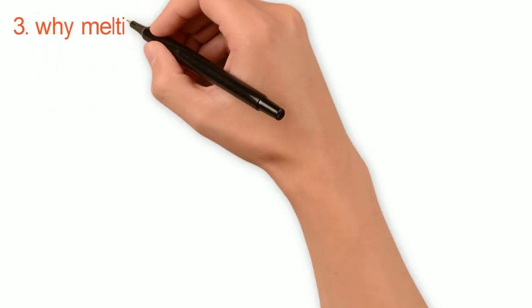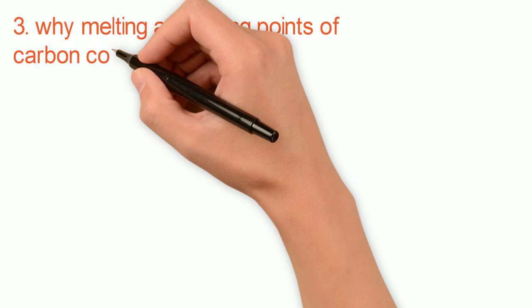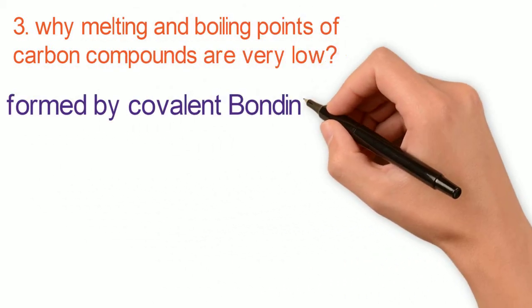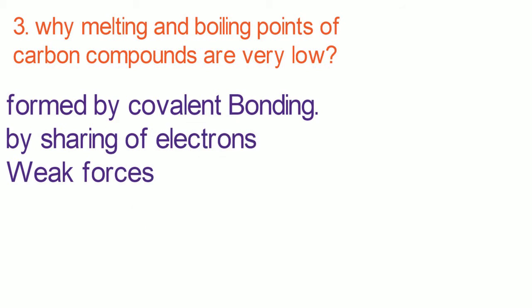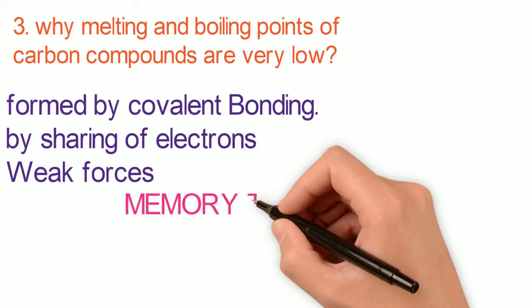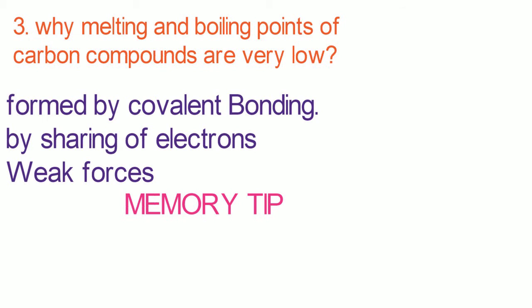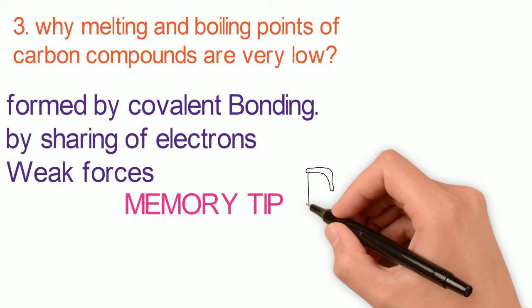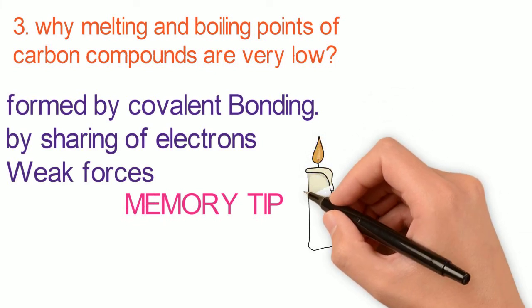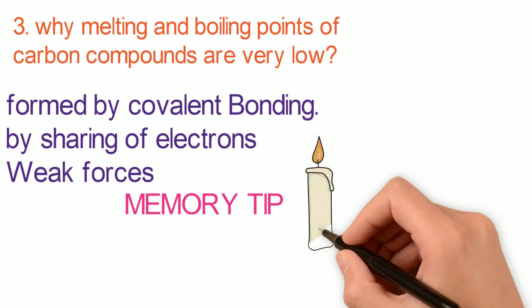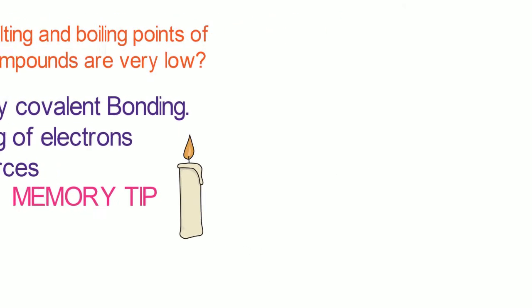Our third question is, why melting and boiling points of carbon compounds are very low? They form covalent bonding by sharing of electrons. The forces are very weak in them. Here is a memory tip for you. A candle is made up of carbon compounds which have lots of covalent bonds, which are very weak. That is why carbon compounds have low boiling point and melting points.